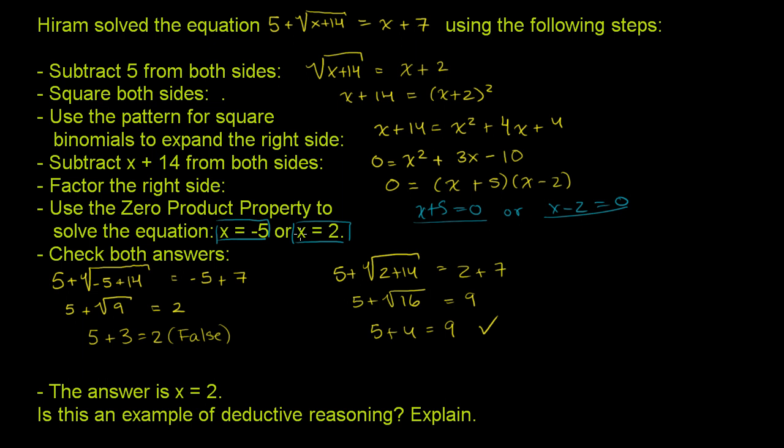Then he checked both answers. He substituted negative 5 into the original equation. So he substituted negative 5 in there. It shows up twice. 5 plus the square root of negative 5 plus 14 is equal to negative 5 plus 7.